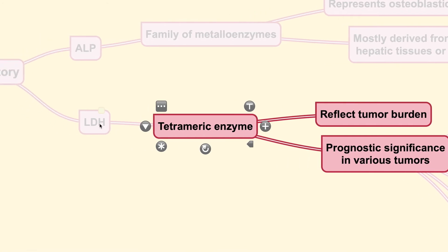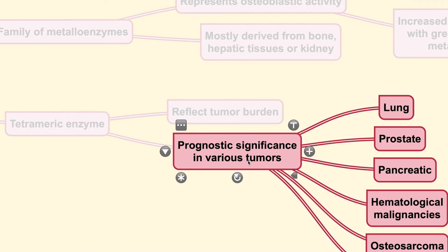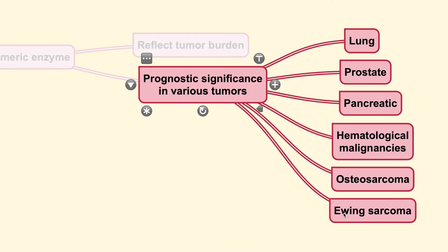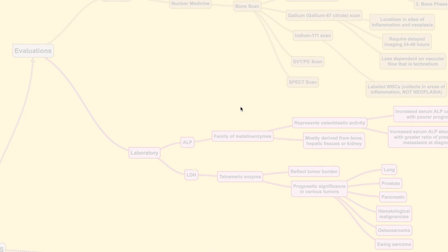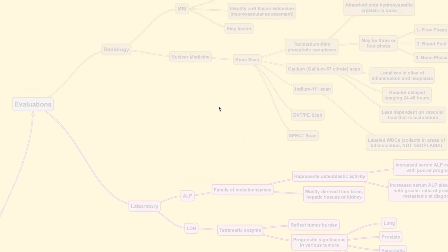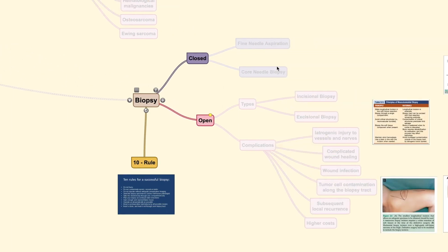LDH stands for lactate dehydrogenase — it is a tetrameric enzyme that usually reflects the tumor burden and is frequently used as a prognostic factor in various tumors. In orthopedic oncology, it is used to evaluate cases of osteosarcoma or Ewing sarcoma. In other departments such as lung, prostate, or pancreatic oncology, LDH is also very useful for determining patient prognosis.